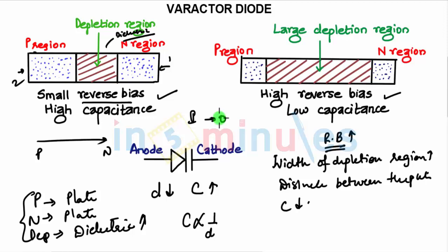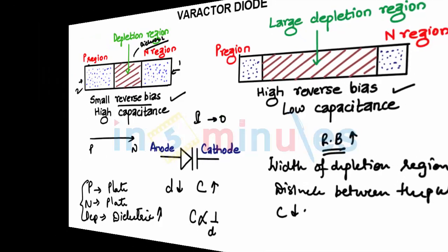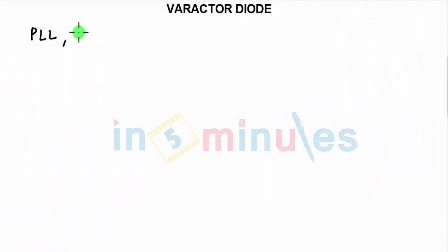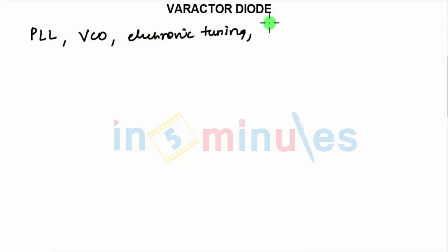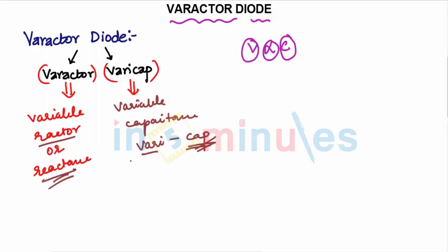Applications of the varactor diode include phase-locked loops, voltage controlled oscillators, electronic tuning, television tuning, mobile phones, parametric amplification, AM radios, voltage variable tuning, and frequency multipliers.